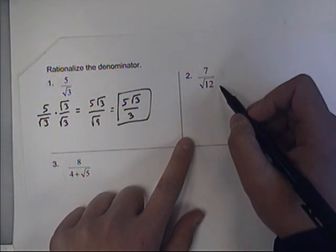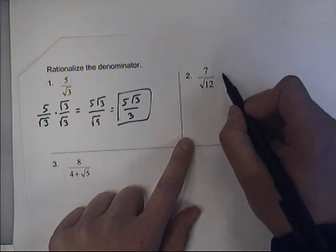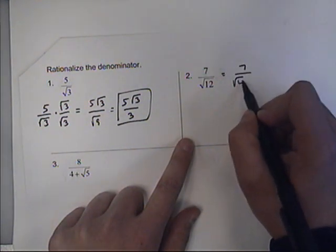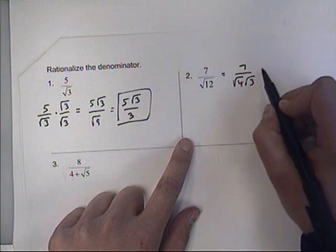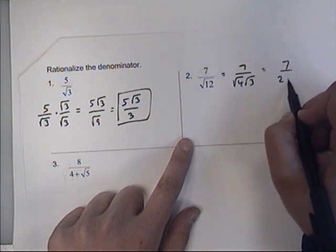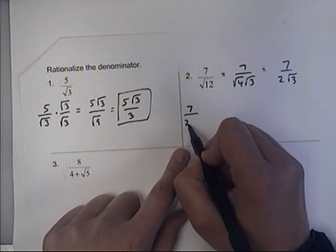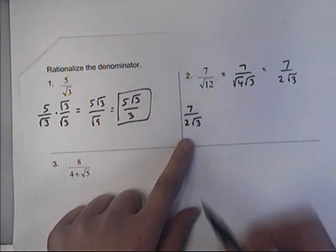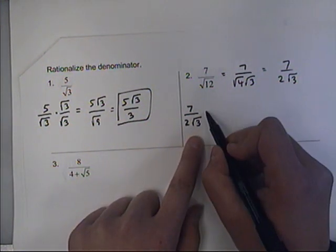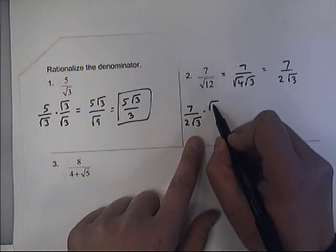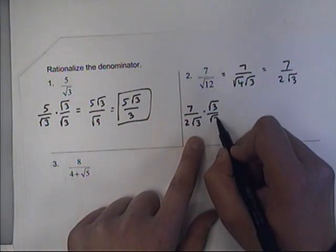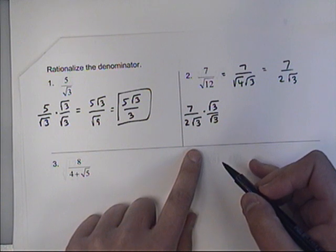We would do the same thing over here, but first we can simplify the square root of 12. The square root of 12 is the square root of 4 times the square root of 3, which would be 7 over 2 root 3. So that when we actually multiply, we're not using the 2. We don't need to use the 2.